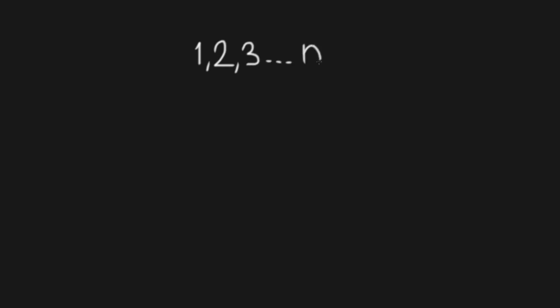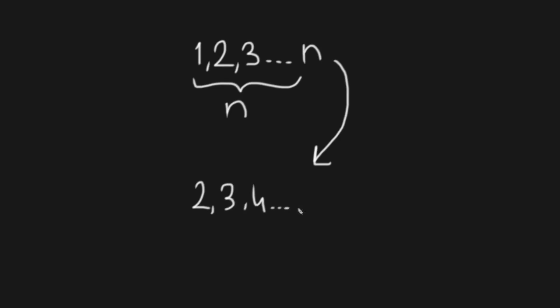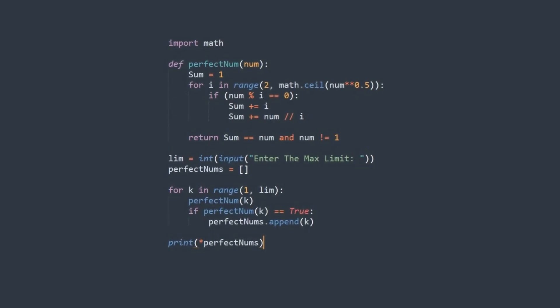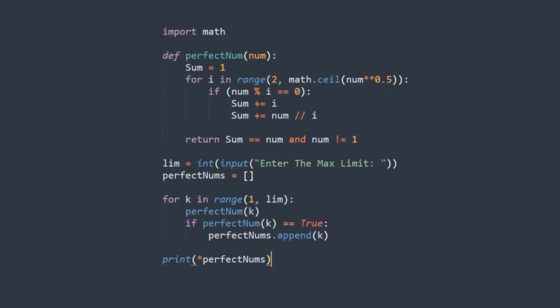Instead of iterating through every number between one and the given number, we iterate through every number between two and the square root of the given number. This reduces our range from n elements to square root of n minus one elements. This algorithm gives the same result in a faster way.